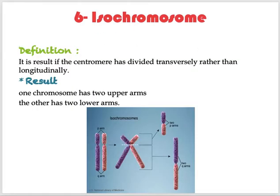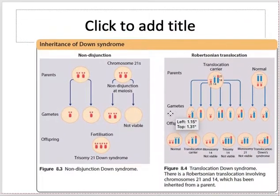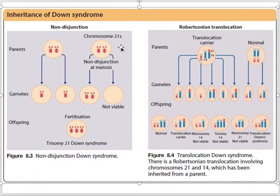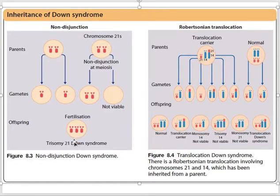Now let's discuss Down syndrome and its inheritance. Down syndrome can arise from non-disjunction: during gamete formation, one gamete receives two chromosome 21s while another receives none. When this gamete fuses with a normal gamete, the offspring carries three copies of chromosome 21 — hence the name trisomy 21. The other mechanism is Robertsonian translocation.